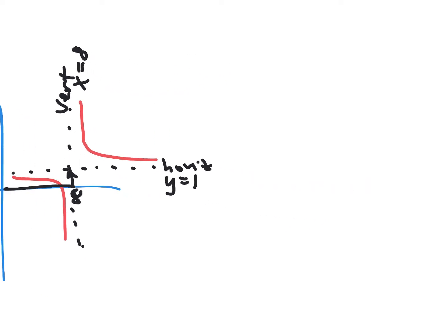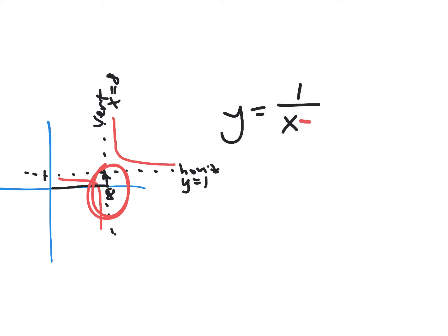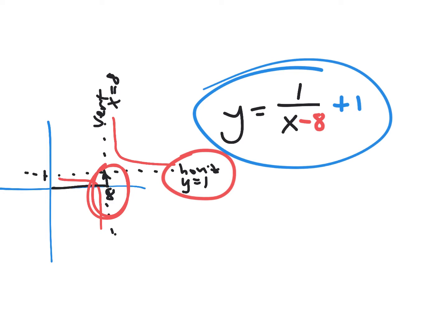Last but not least, you get an equation that looks like 1 over x — that's the parent function. But this one got shifted eight to the right, so it's minus eight inside, and it got shifted up one, so plus one outside. That gives you your equation and the graph of it, and I just described the asymptotes. Do you have any questions about what we learned yesterday? Because today is just a repeat of that.